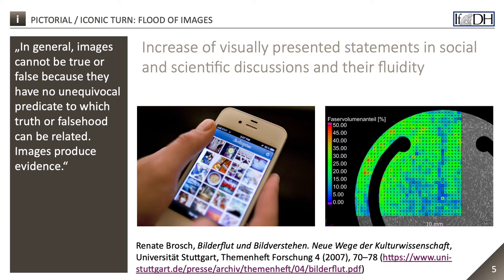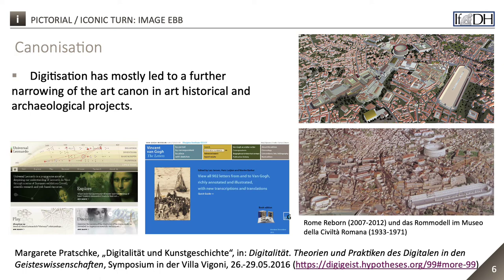According to Margarete Pratschke, the flood of images in the media world surrounding us is encountered by an ebb and flow in the scientific examination of images. In contrast to the supposed decanonization effects associated with digitization, art history projects usually show a more far-reaching narrowing of the art canon, which initially concentrated on the works of recognized artists in their digital acquisition strategies — you know the projects on Leonardo and Van Gogh. The major museums are understandably taking a similar approach and started putting their highlights on the internet. Similarly, archaeologists first visualized Athens and Rome in 3D models, whereby the digital models were often not based on the latest excavation results, but in the case of Rome, on the model of Gismondi from the 1940s.